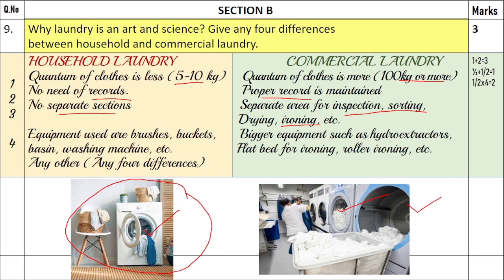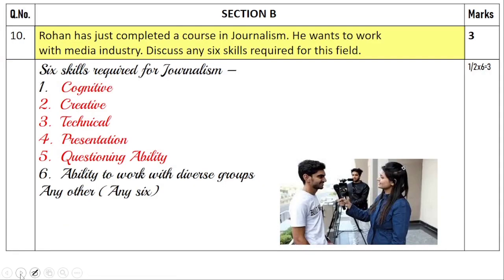The equipment used at home includes brushes, bucket, basin, washing machine, soaps, and drying ropes. But in a commercial laundry you have bigger equipment such as hydro extractors, dry cleaning machines, flatbed ironing machines, roller ironing machines, calendaring machines, and huge dryers.